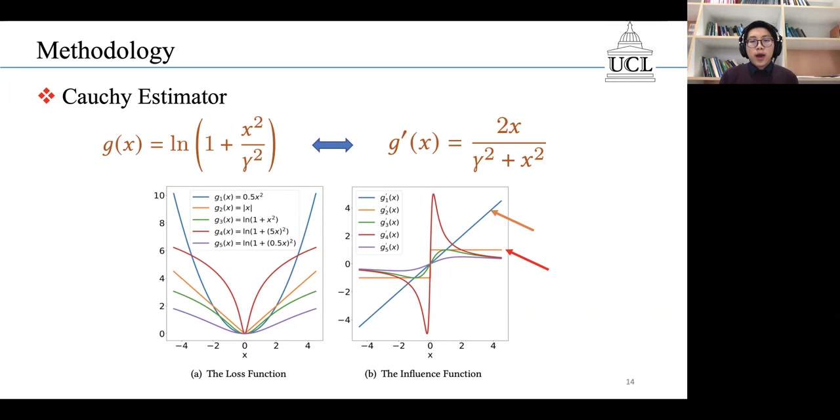This influence function takes the value in a range of minus one over gamma and one over gamma. More importantly, when x goes to infinity, this loss function will converge to zero. We also show the loss function and influence function of the Cauchy Estimator in this figure.